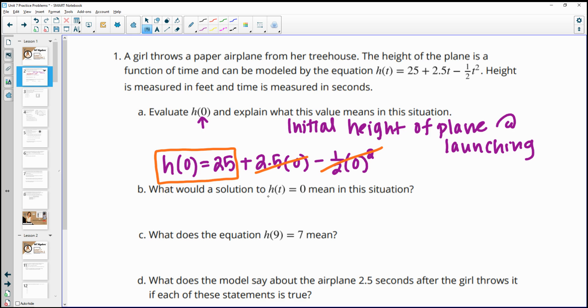Part B, what would a solution to h of t equals zero mean? So now this is giving us the height is zero and it's asking us what the time is. So if we figured out a time value here,